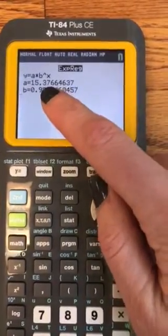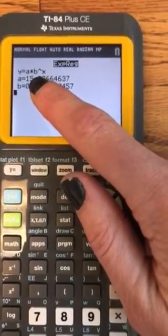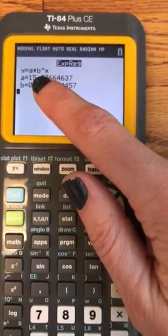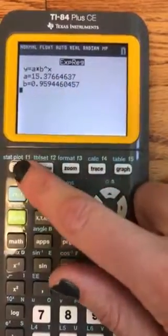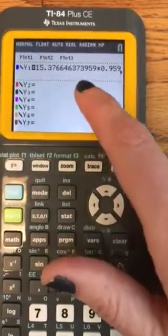And it gives you the a and b values for the equation y equals a times b to the x. You can look at your equation if you want to. It's here in the y equals.